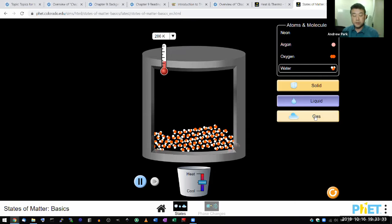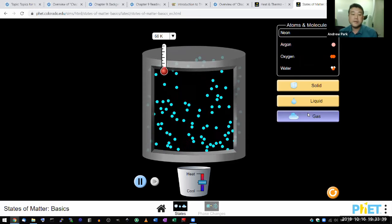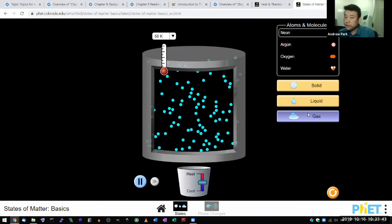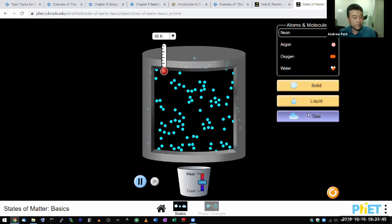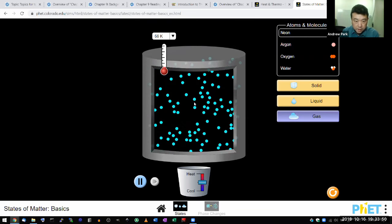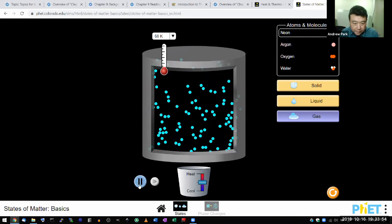When something like water or neon is in a gas state, then these atoms or molecules are very far from other atoms and molecules. So you can see these occasional collisions. Can I slow this down? I can't. Okay, I can pause.